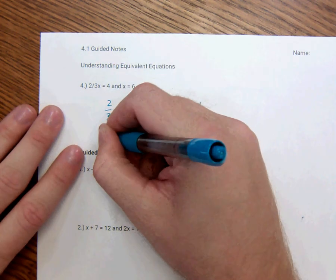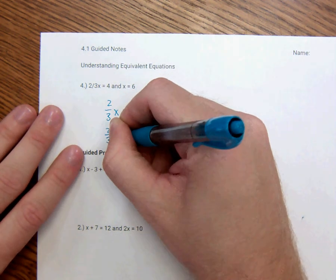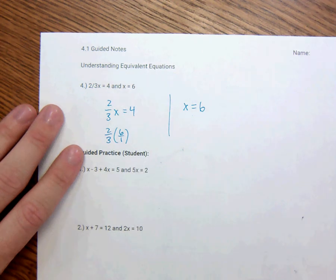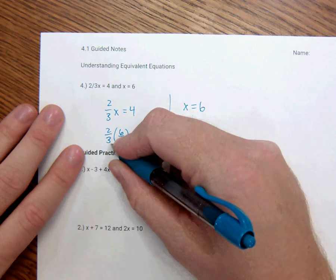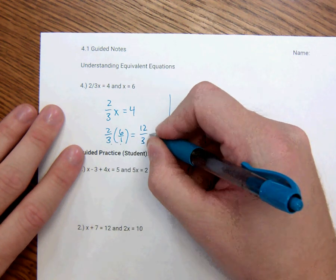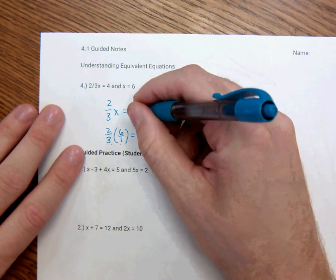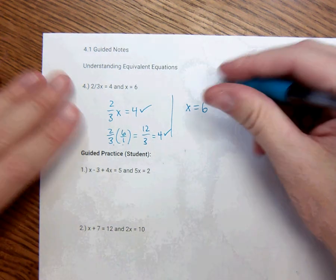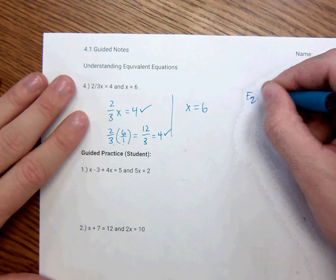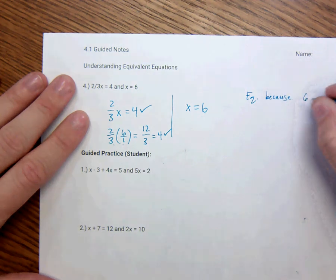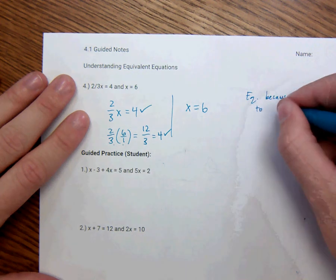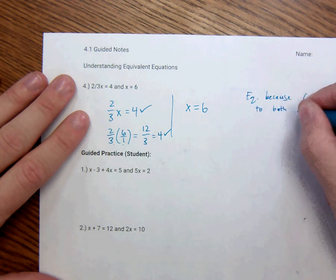So first let's try that. We'll say 2 thirds times 6. Remember, that's like 6 over 1. Anytime I work with fractions, whole number over 1. 2 times 6 is 12. 3 times 1 is 3. 12 divided by 3 is 4. It checks out. So it is equivalent. Because 6 is solution to both equations.